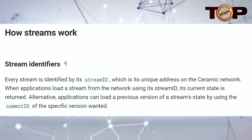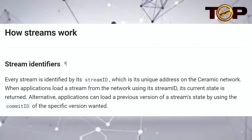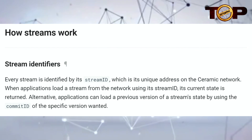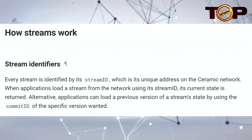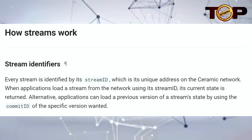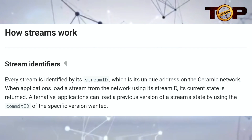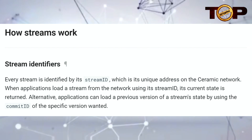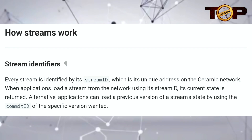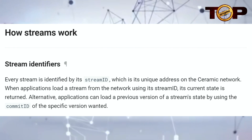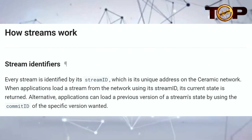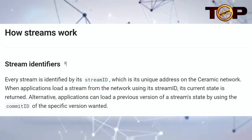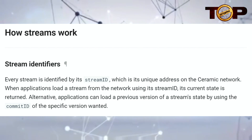Every stream is identified by its stream ID, which is its unique address on the Ceramic network. When applications load a stream from the network using its stream ID, its current state is returned. Alternatively, applications can load a previous version of a stream state by using the commit ID of the specific version wanted.